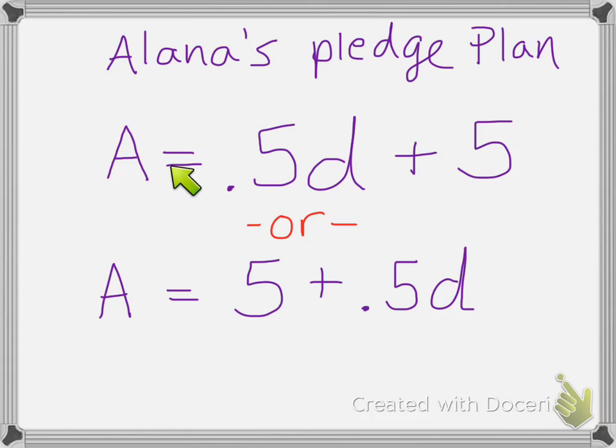So again, the a is going to be our y. The 5 tenths is going to be our m. The d is going to be our x. And the b is going to be all by itself over here. Your b is always going to be all by itself. Your mx are always going to be together.